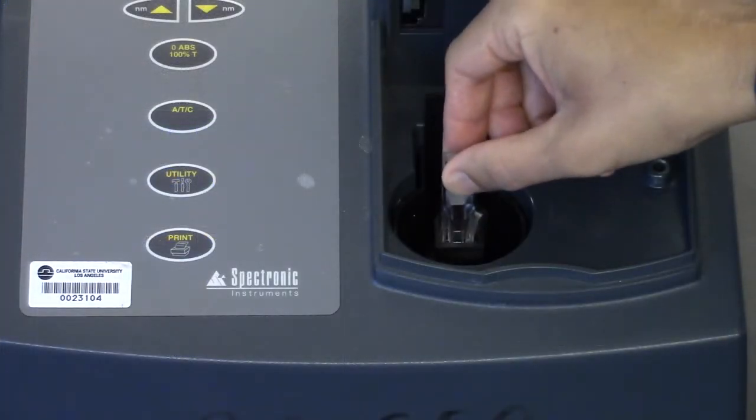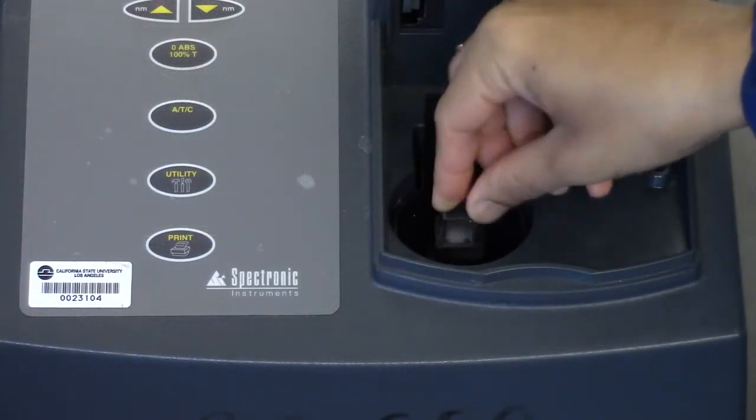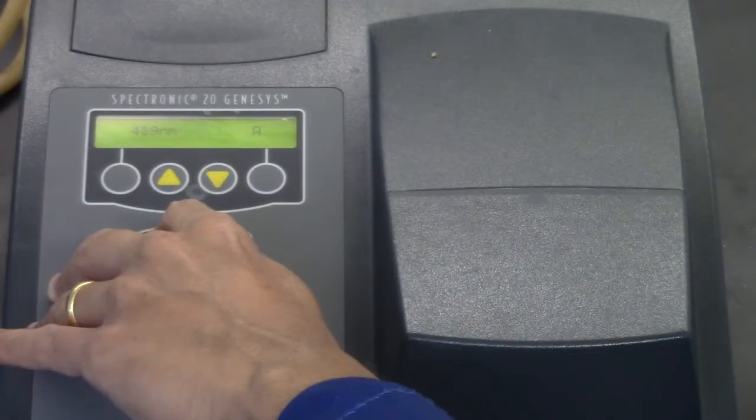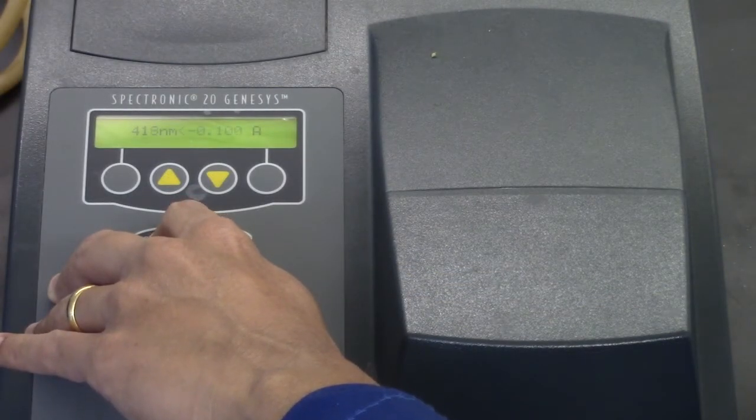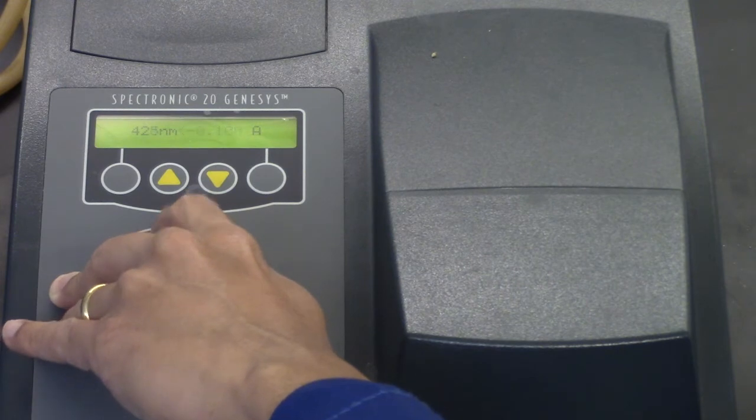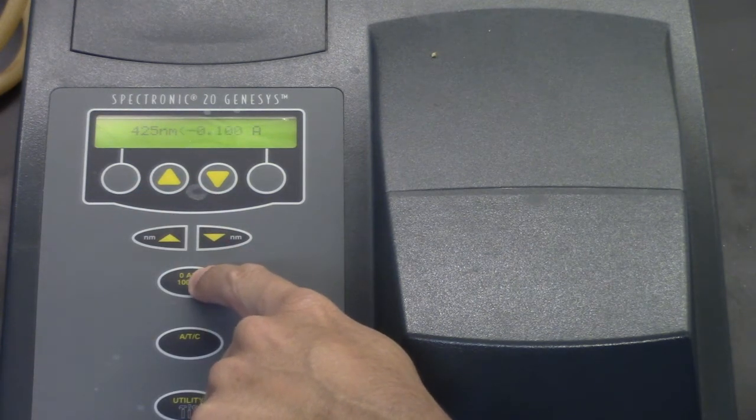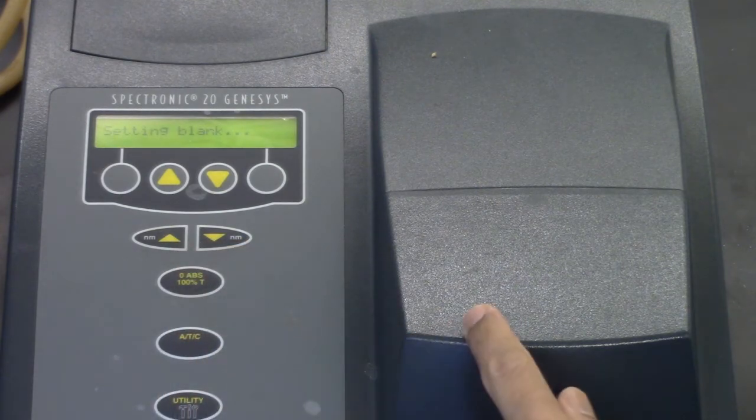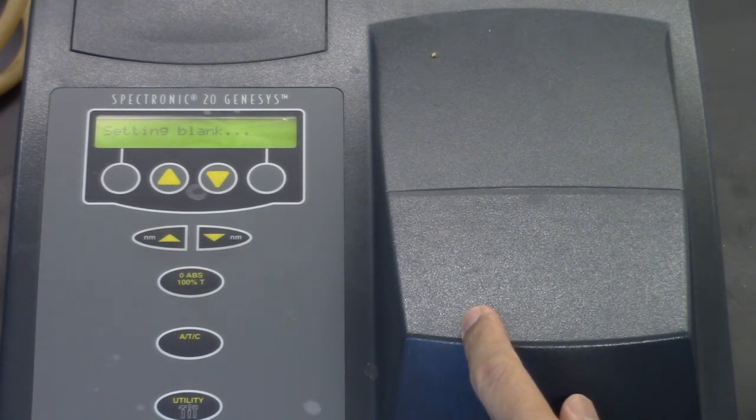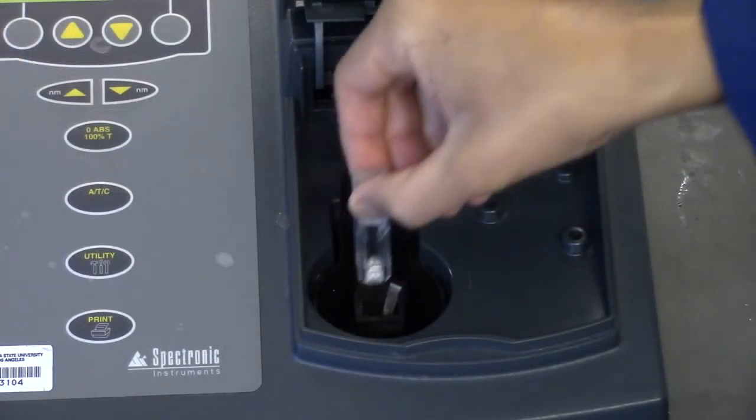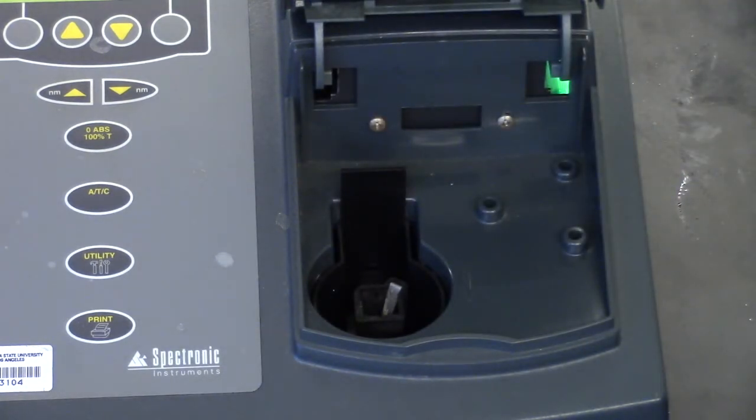Change to the next wavelength and calibrate again with the blank. Remember to always use the blank and set the absorbance to zero for each wavelength. Insert A3 and measure the absorbance.